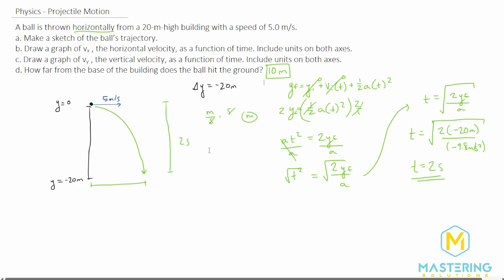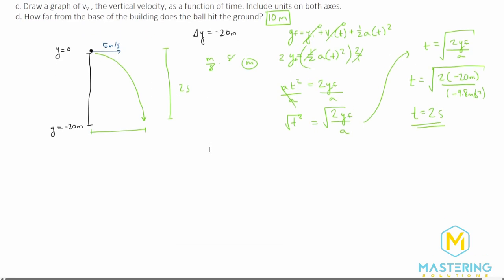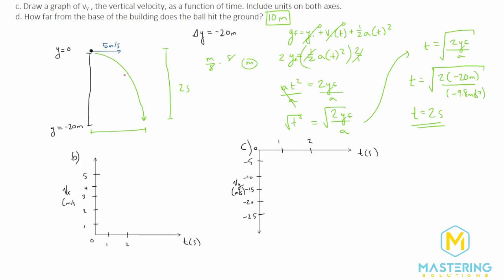Now let's draw our graphs for the x and y components of velocity. For the x component, we already know it does not change for the entire 2 seconds, so we draw a straight horizontal line at 5 meters per second for 2 seconds. That is the graph for the x component of velocity — a constant 5 meters per second for 2 seconds.